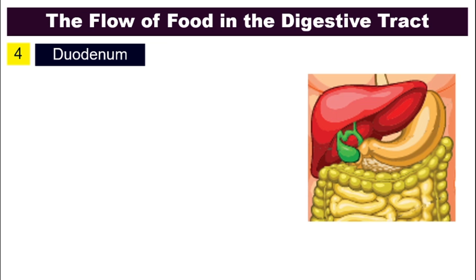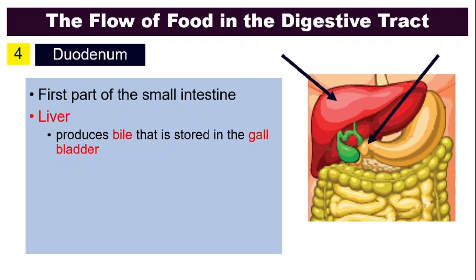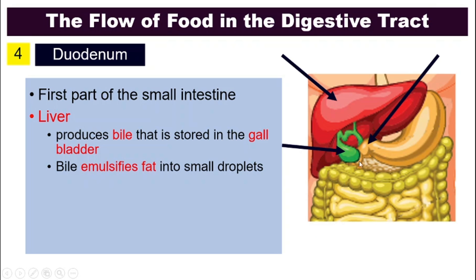Number four: the duodenum. The duodenum is the first part of the small intestine — when food exits the stomach going into the small intestine, this beginning section is called the duodenum. A lot of things happen here. The liver — the red organ — produces bile, which is stored in the gallbladder. Then bile goes into the duodenum to emulsify fat into small droplets so that it can be digested later.